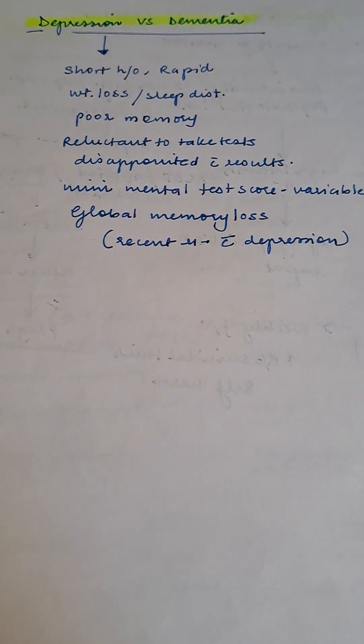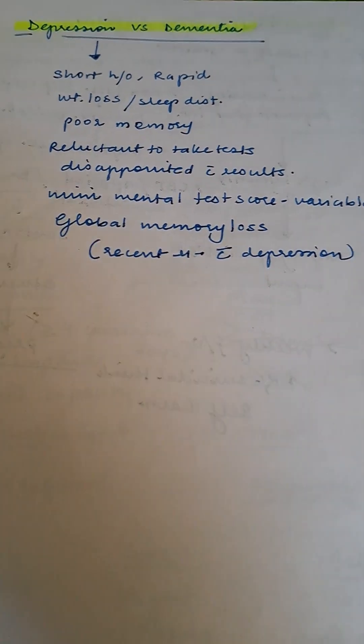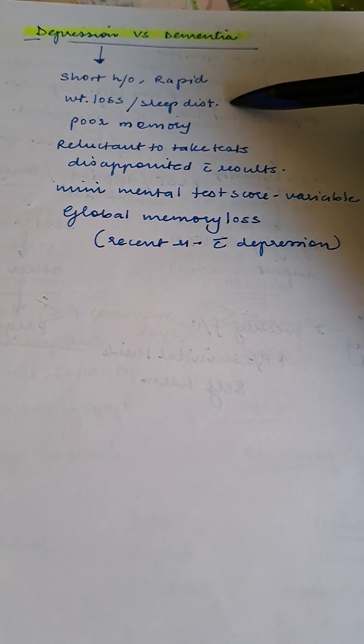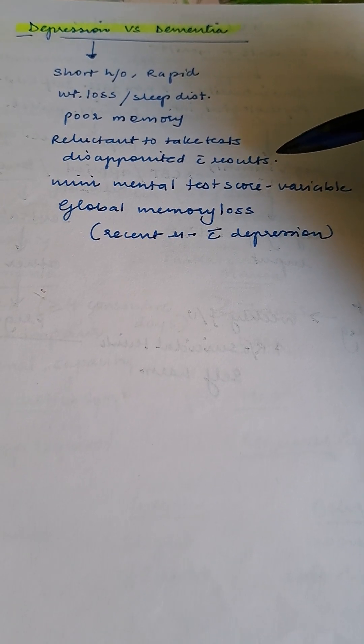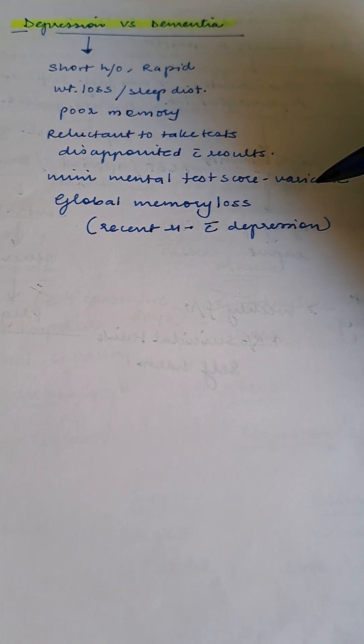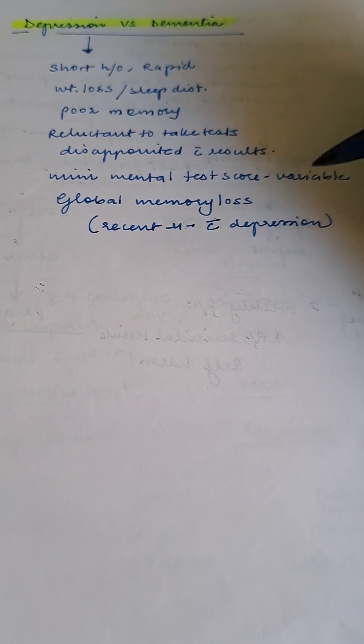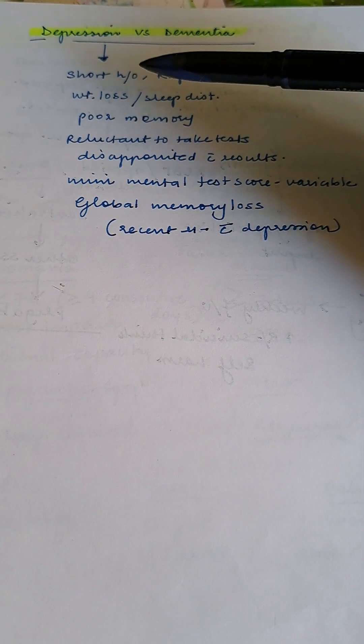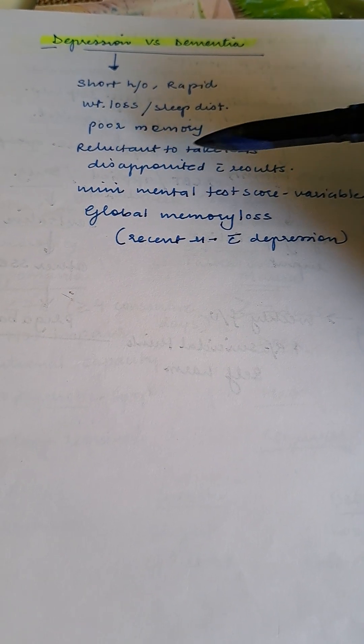Depression versus dementia. Depression has short history, rapid onset, weight loss, sleep disturbance, poor memory, patient reluctant to take tests, disappointed with results. MMSE is variable. Global memory loss with recent memory affected. This describes both conditions with distinctions.